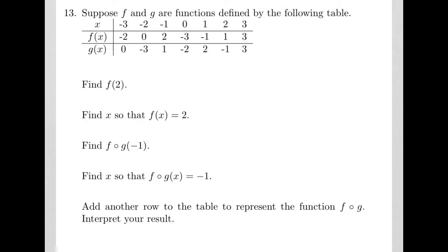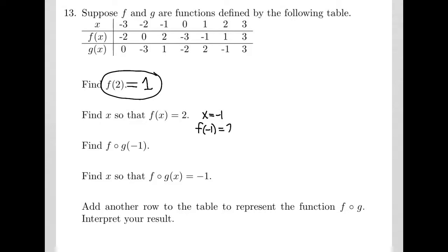Problem 13 uses a table that defines two functions f and g. The x row is the input, f of x is the output from f, and g of x is the output from g. The first question asks for f of 2: finding 2 on the input line, the output of f is 1, so f(2) equals 1. The second question asks for x such that f(x) equals 2: going to the output line and finding 2, the input was negative 1, so x equals negative 1.